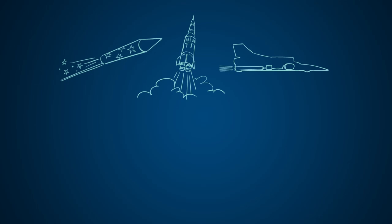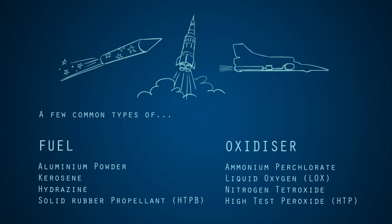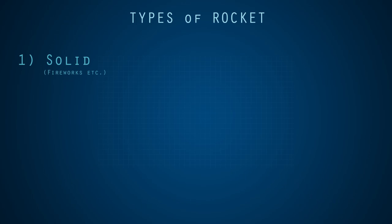All rocket types need two basic ingredients: fuel and oxidizer, so that the fuel can burn. Solid fuel rockets are the most common. Here, a powdered mixture of solid fuel and oxidizer is packed into a casing.